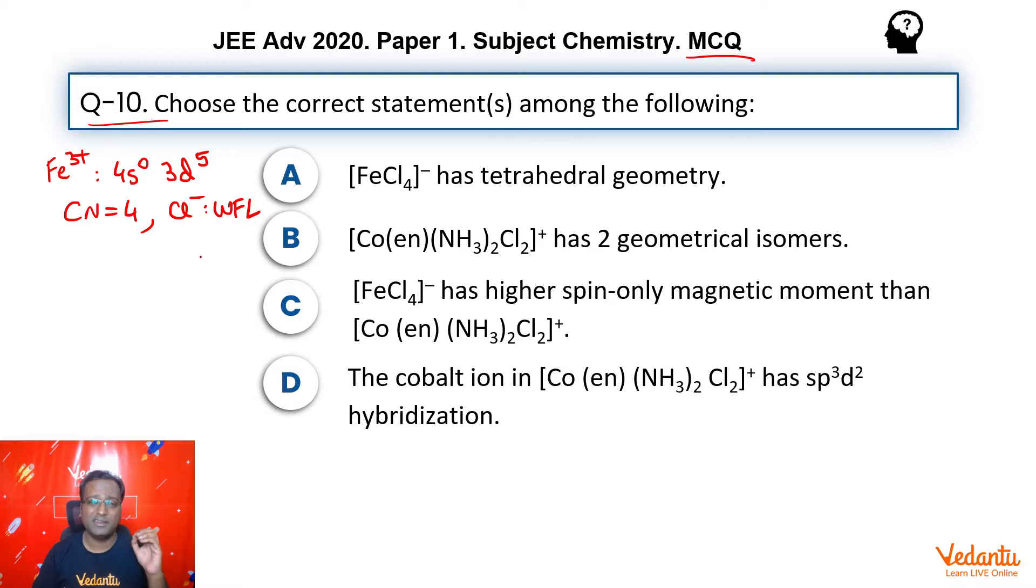We know that in weak field ligand, pairing does not take place and so no inner orbital is available for hybridization and hence the hybridization here will be SP3. Corresponding to SP3, the shape is tetrahedral in nature. So, this option is definitely correct.